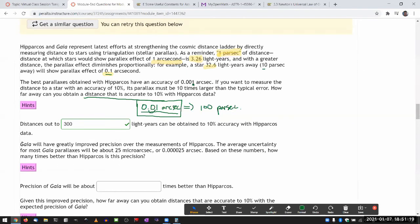So the next part says Gaia will have greatly improved precision over the measurements of Hipparchus. The average uncertainty for most Gaia parallaxes will be about 25 micro arc seconds. And just so that you can connect these two numbers together, what 25 micro arc seconds is, is 25 times 10 to the power of minus 6 arc seconds. And when you work out this number, you will see this number, 0.000025 arc seconds. So based on these numbers, how many times better than Hipparchus is this precision?